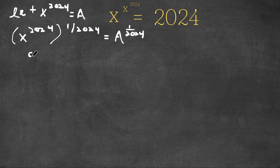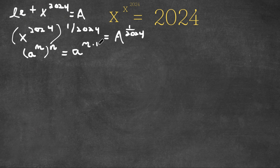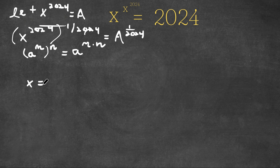Now, if we have something in the form a to the power of m to the power of n, this is equal to a to the power of m times n. So x to the power of 2024 to the power of 1 over 2024 — well, 2024 times 1 over 2024, these two simply cancel out and it's simply just 1. So we have x to the power of 1, which is the same thing as x, is equal to a to the power of 1 over 2024.